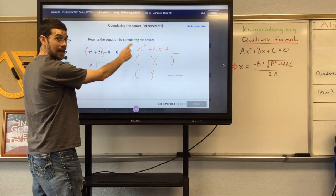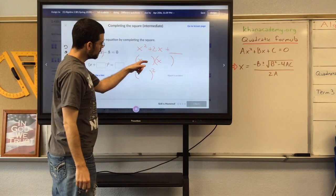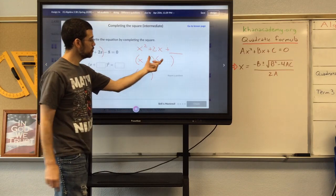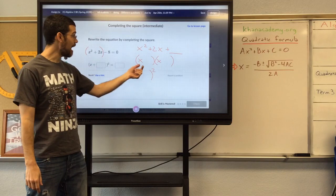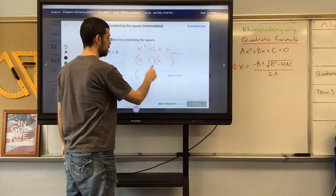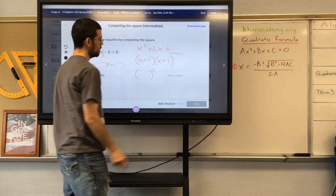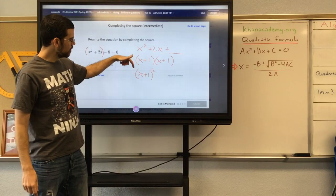Something times something has to give us x squared. That'll be x times x. Something times x plus something times x has to equal 2x. And those two numbers have to be the same number. That means each of them has to be half as much as the 2. So we have 1 and 1. They'll have to be positive so that we get a positive 2. So we have x plus 1 squared.